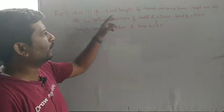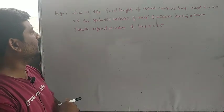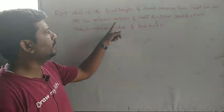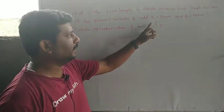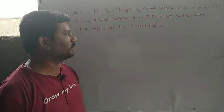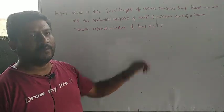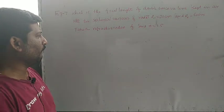Let us solve a problem. What is the focal length of a double concave lens kept in air with two spherical surfaces of radii R1 equals 30 centimeters and R2 equals 60 centimeters? Take the refractive index of the lens n equals 1.5.